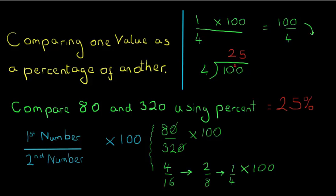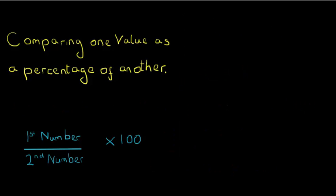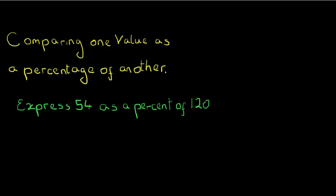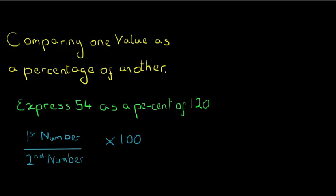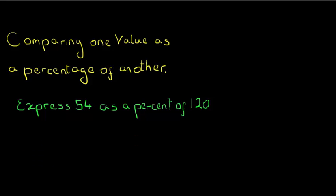So we've taken the first number and compared it by putting it over the second number, then multiplied by 100. The primary skill we've used is simplifying fractions. Now let's do another one: we have to express 54 as a percentage of 120. Again I'm going to use the idea of first number over second number times 100, so the first number is 54 and the second number is 120.